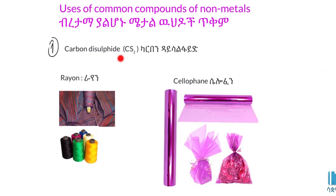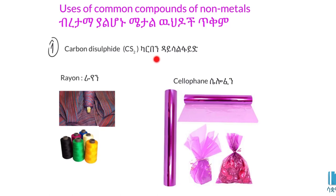Carbon disulfide is a 9-metal compound. Carbon dioxide is also a 9-metal compound, ranging from a 9-metal to a 10-metal to a 100-metal and up to a 150-metal compound.